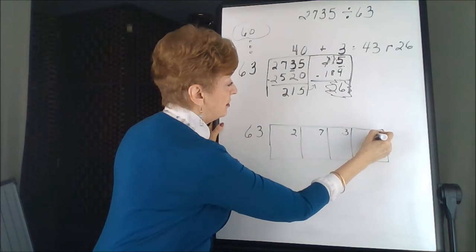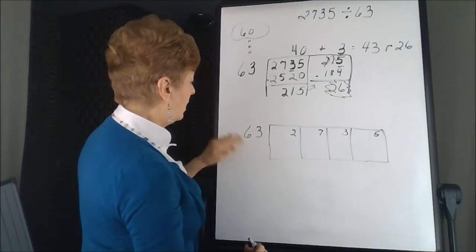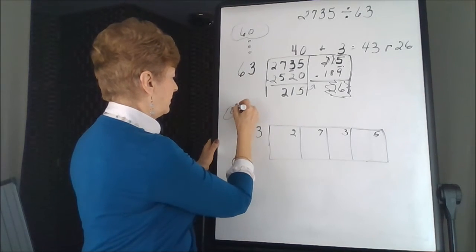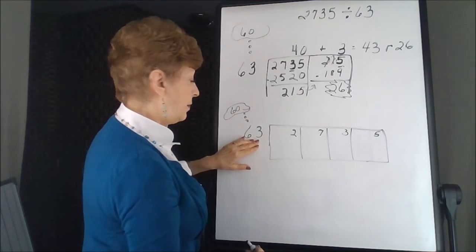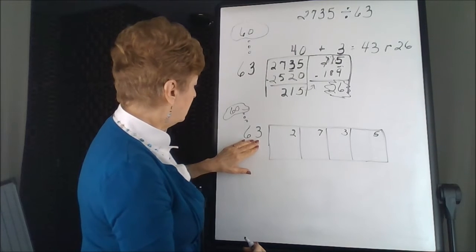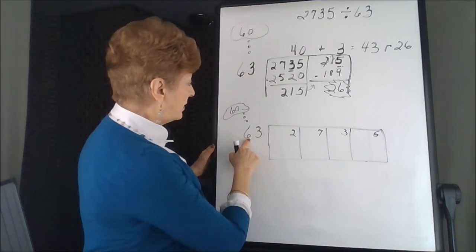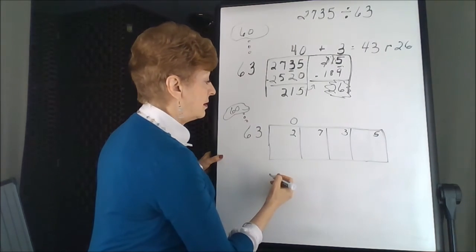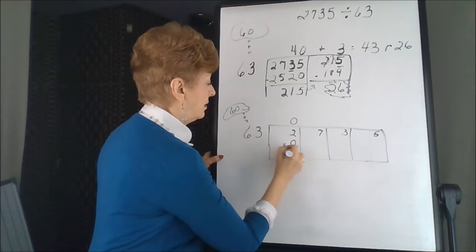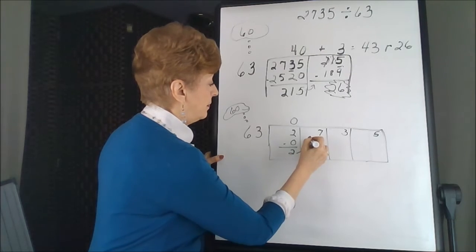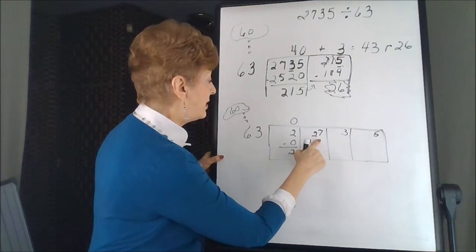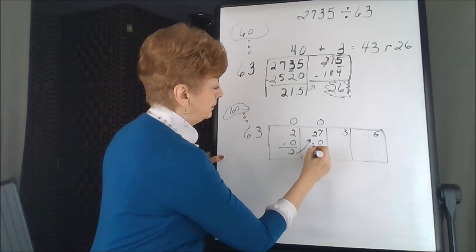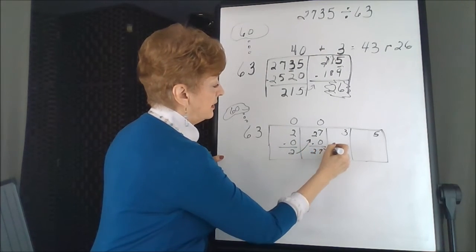This is a variation. Again, I'm going to estimate this as 60. And now I'm going to start my work. Will 63 or even 60 go into 2? No, the 2 goes up. 27 is still too small. This goes up.